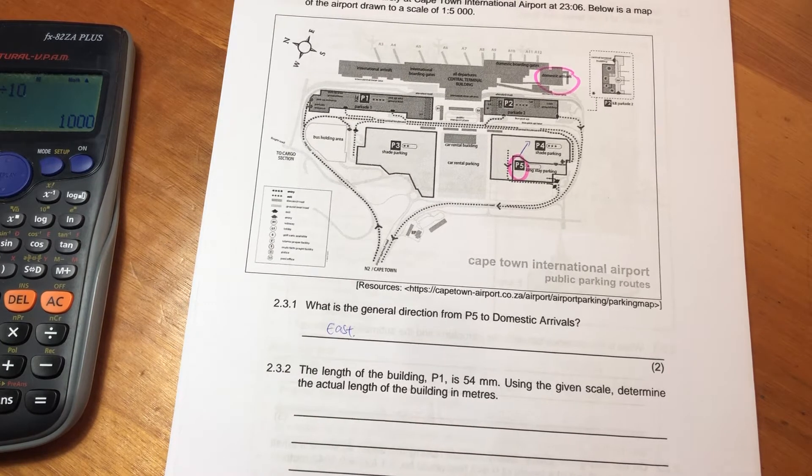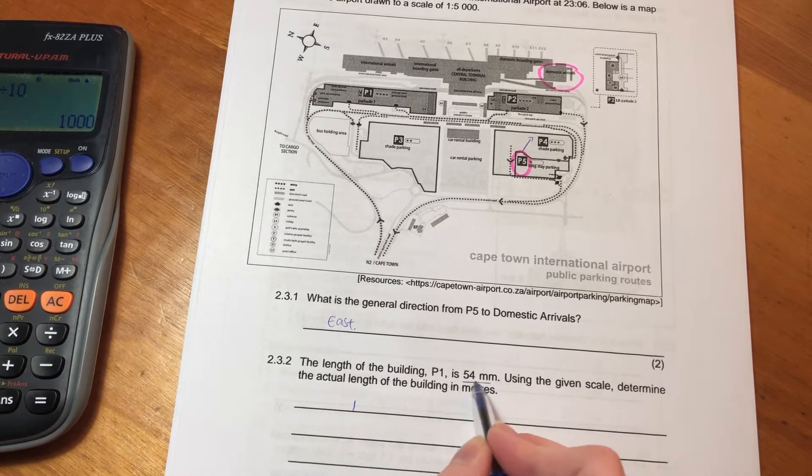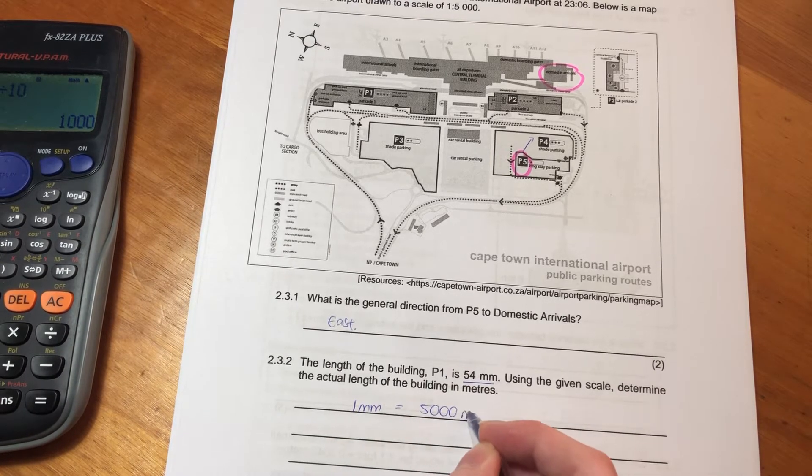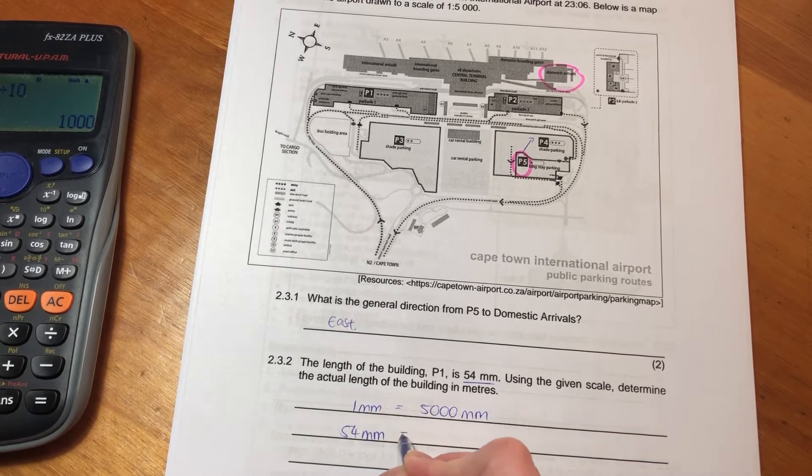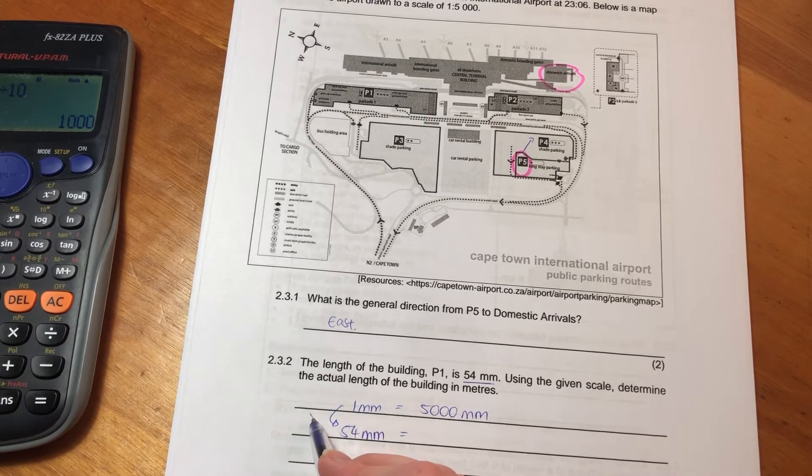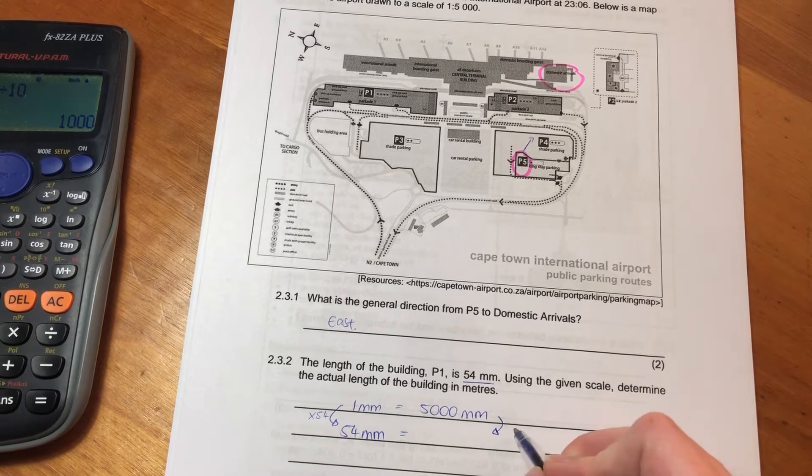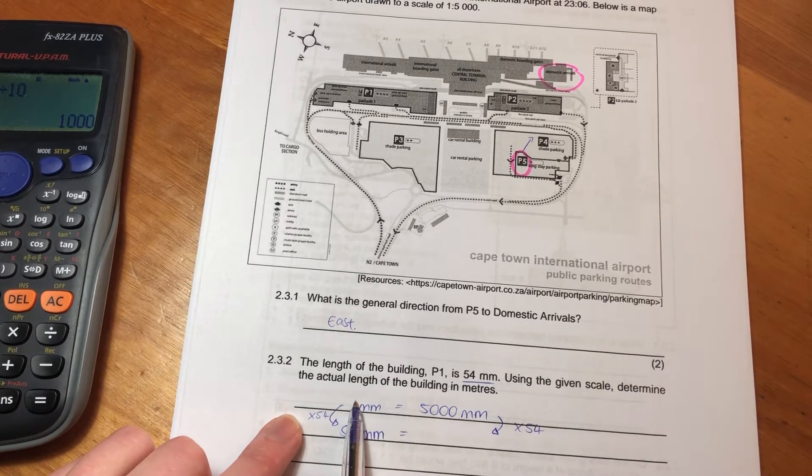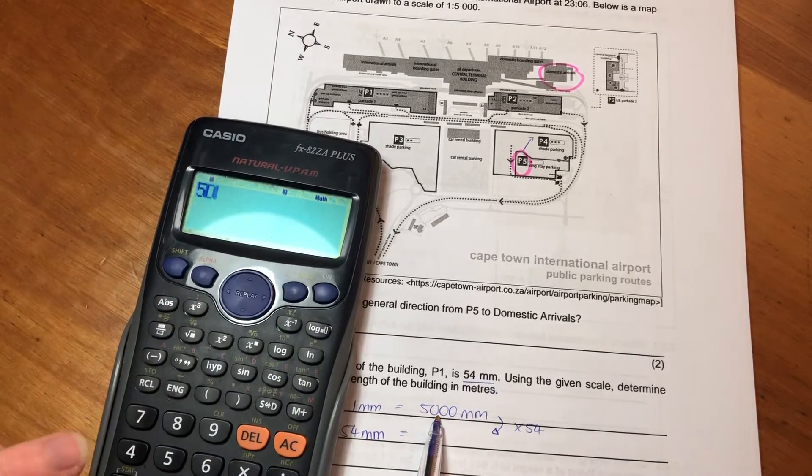So we know that one - I think it's one millimeter in this instance, because they've given us the distance in millimeters. So one millimeter equals 5,000 millimeters in reality. But now we have 54 millimeters. So what we've done is we have to get one to be 54. So we times that by 54. But then when it comes to a ratio, and I keep saying this, what you do to the one side, you have to do to the other side. So we've times one by 54 to get 54. But here, we're going to times 5000 by 54.